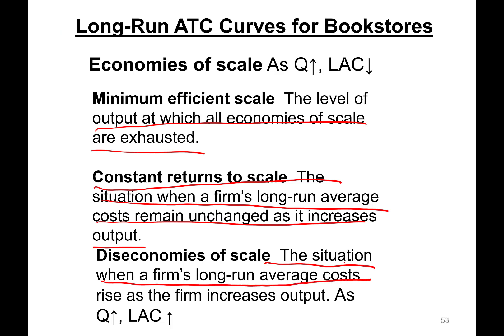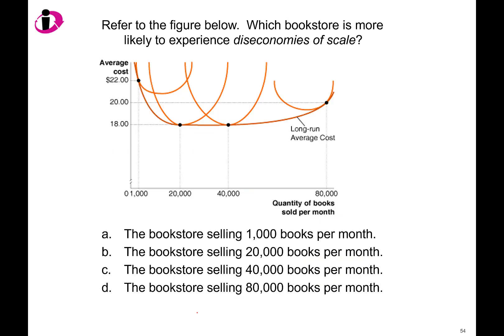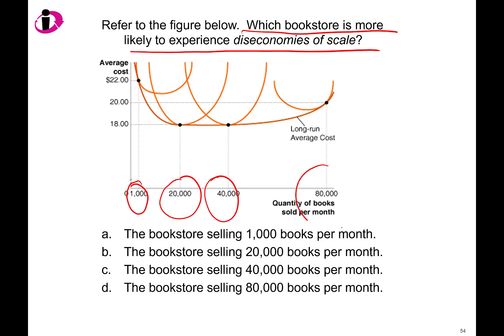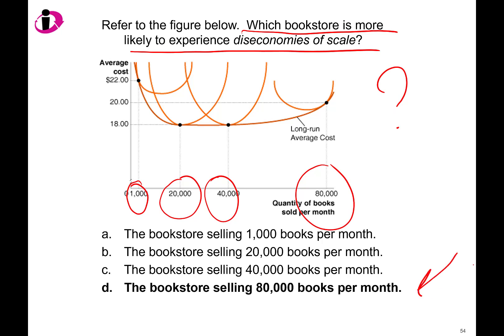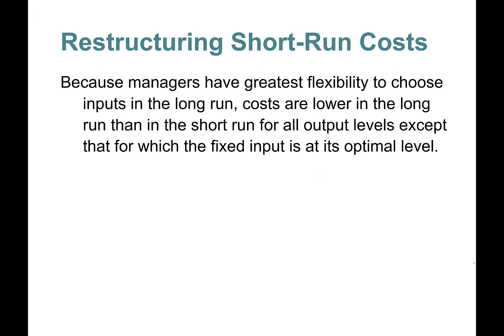Diseconomies of scale is when a firm's long-run average cost rises as it increases its scale or output. Quick question: which bookstore is most likely to experience diseconomies of scale — one producing 1,000, 20,000, 40,000, or 80,000 books? The answer is 80,000 books per month.